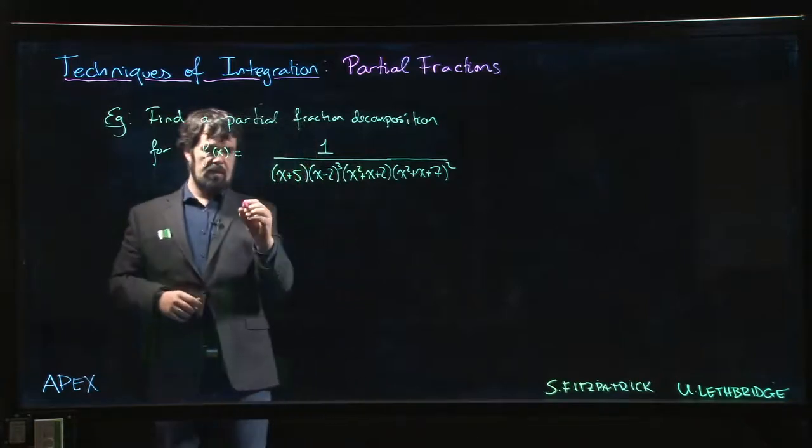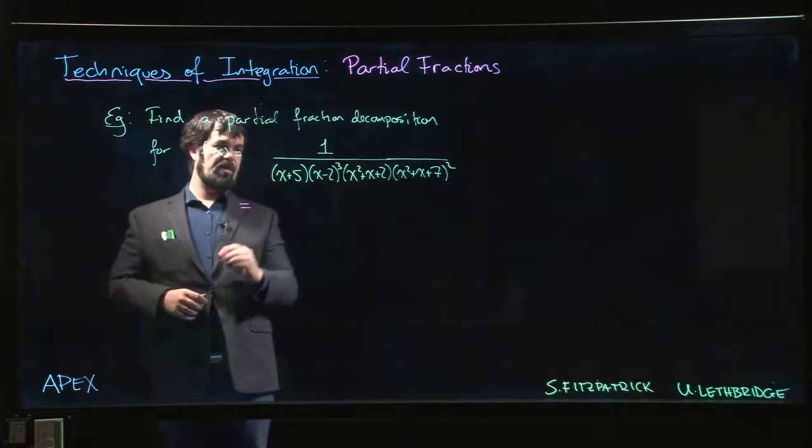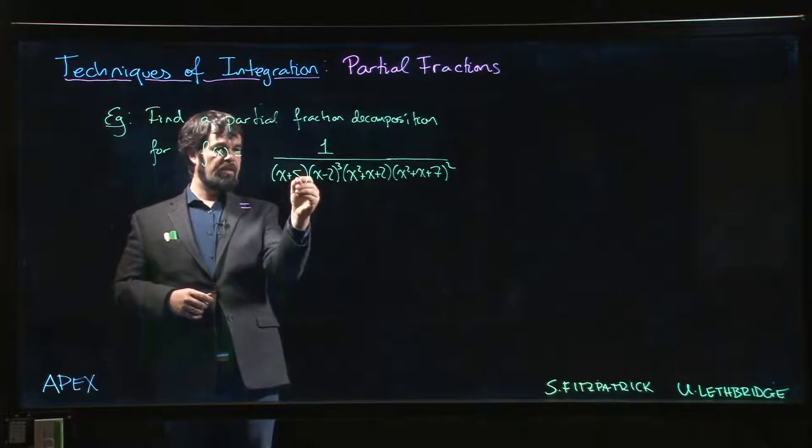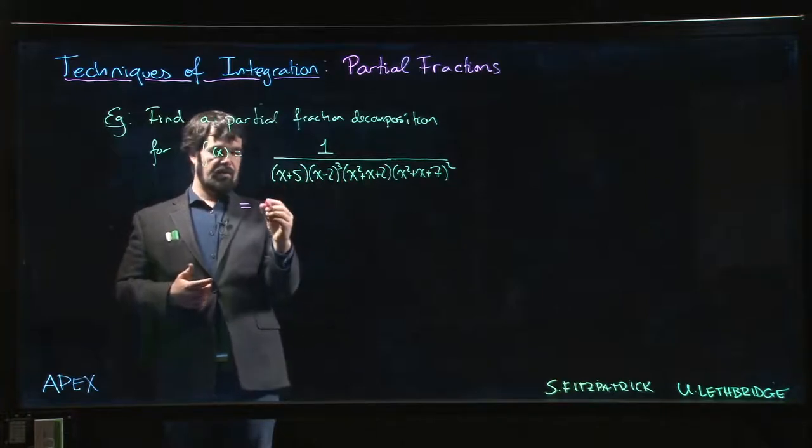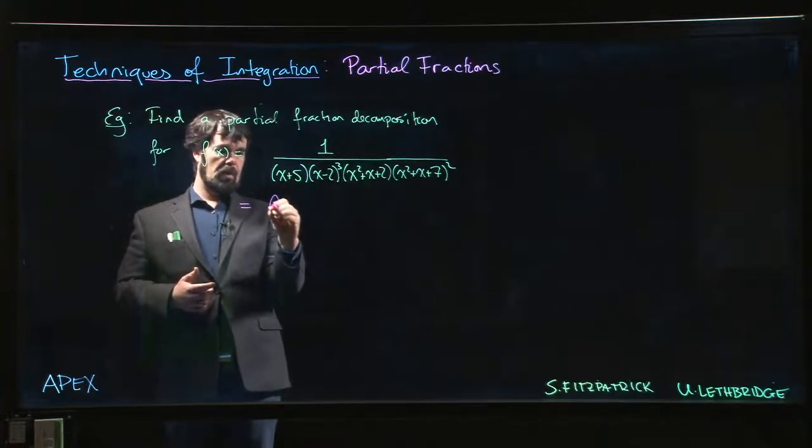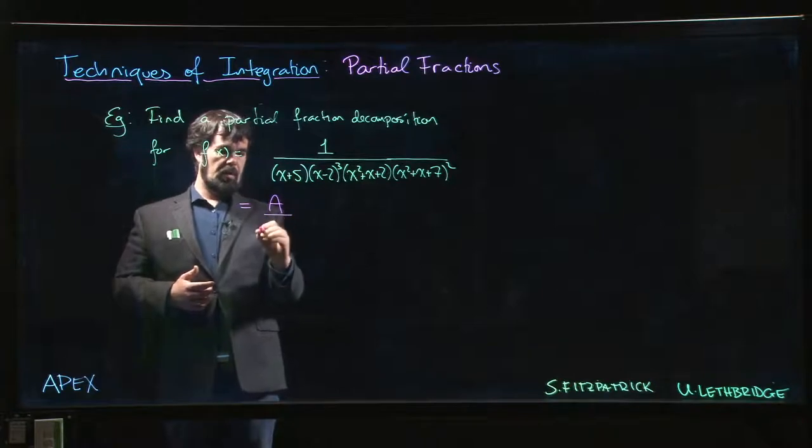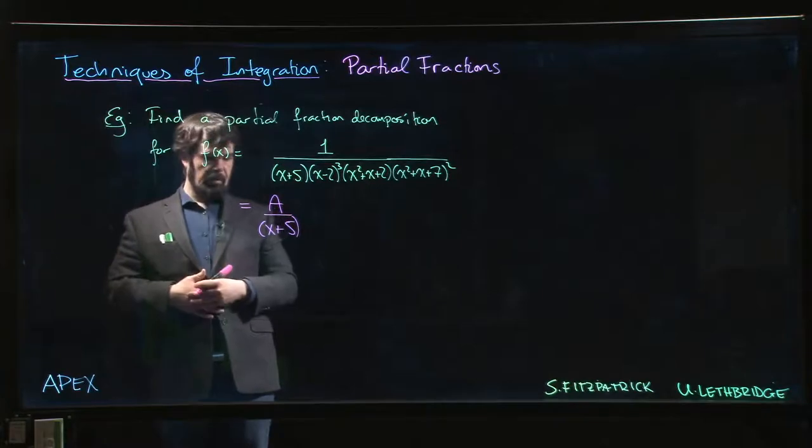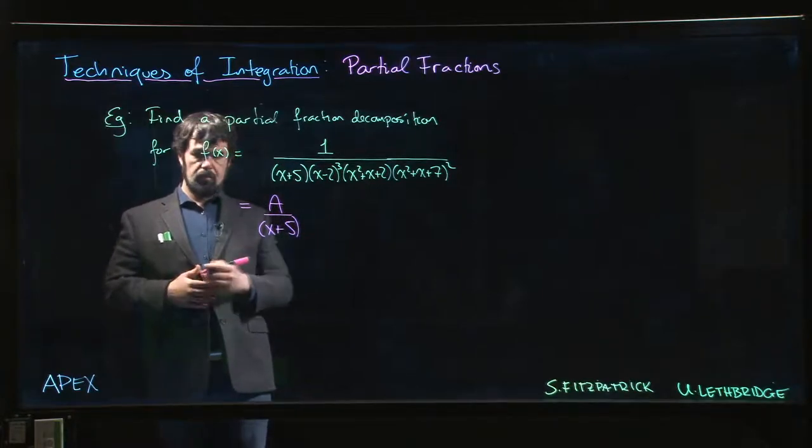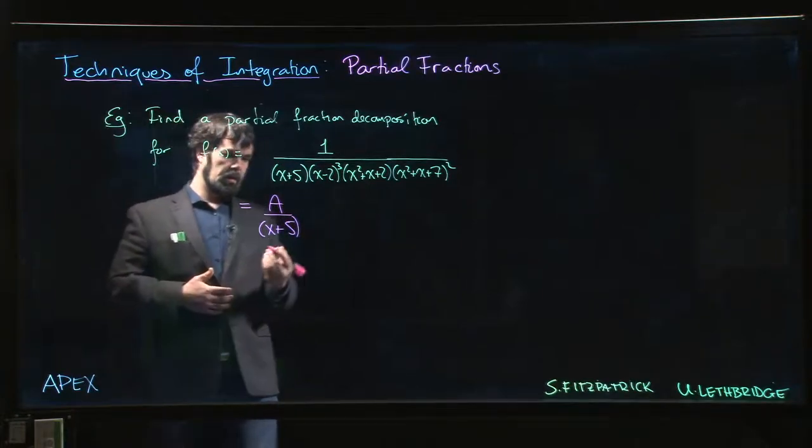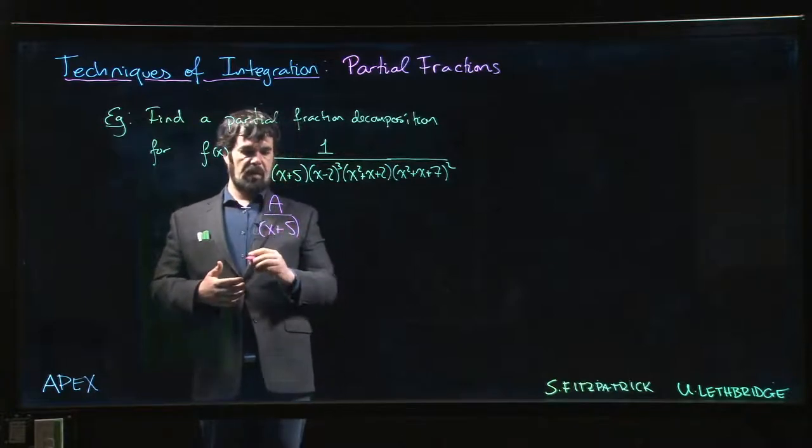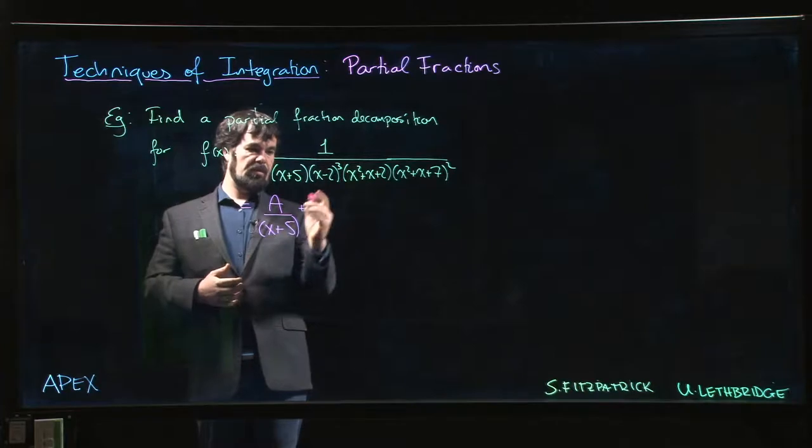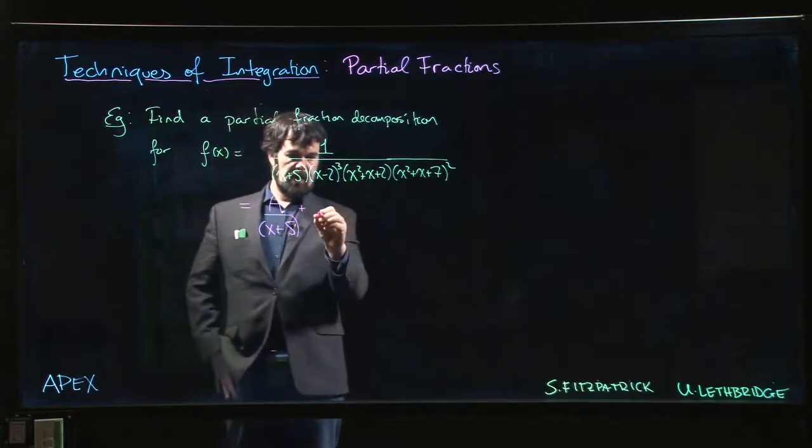The idea is that we want to get a breakdown for this. Anytime we have a linear factor that's not repeated—it just appears once—we look for a contribution of the form A over x plus 5. We don't know what these are yet, so we'll just write it as A over x plus 5.